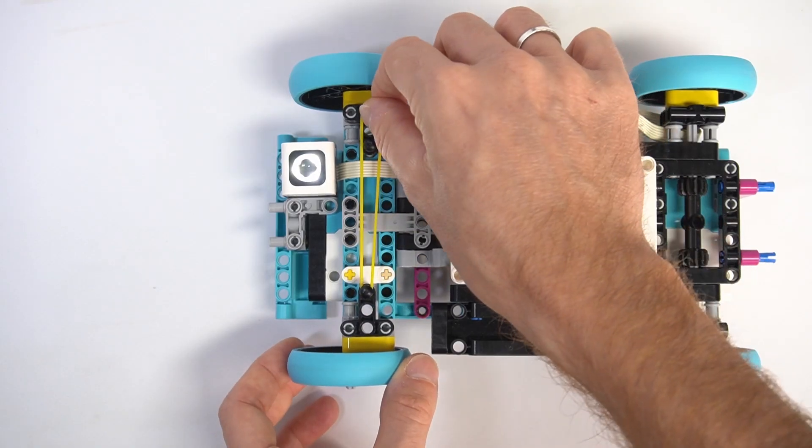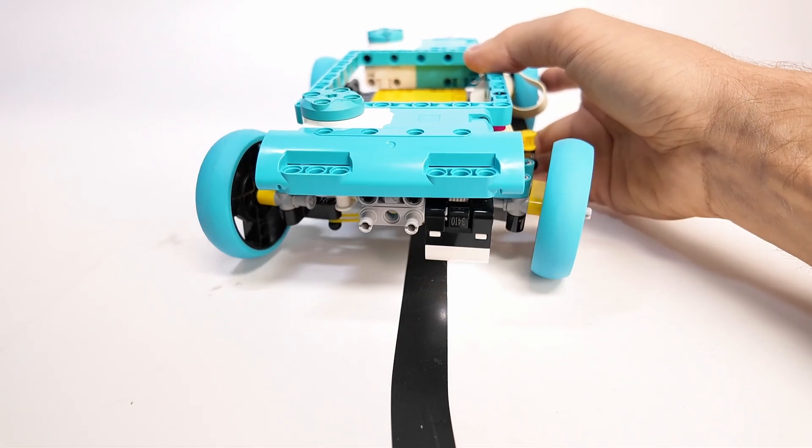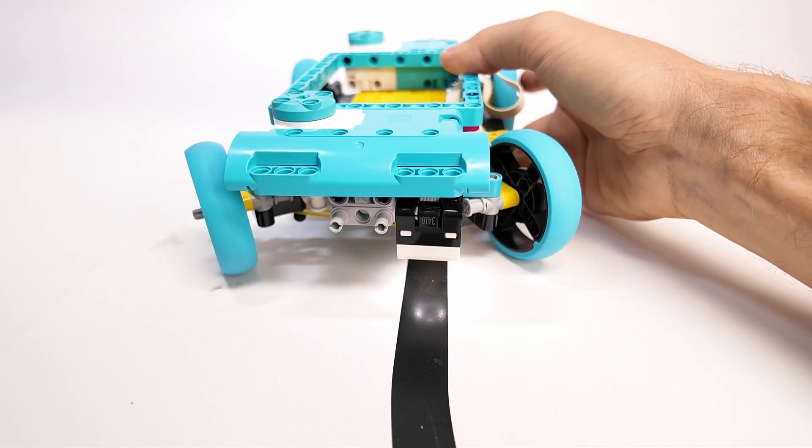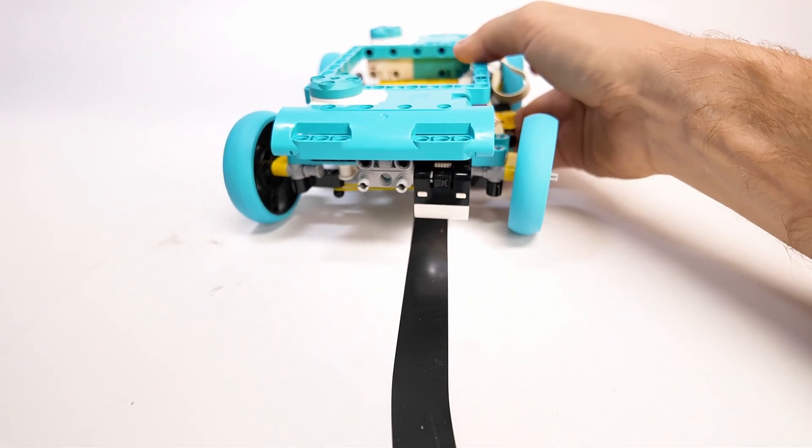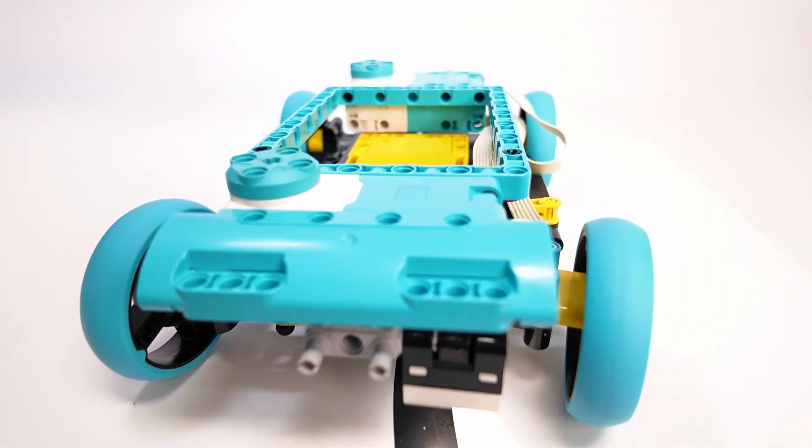With this sensor, you can program your car to follow a bold line on the ground, whether it's black on white or white on a dark surface. Suddenly, your simple steering system can do some pretty clever tricks.